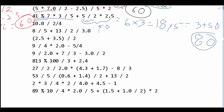Next, we have 8 divided by 5, which is just going to be 1, because we're rounding 8 down to 5 and dividing by 5. Then we are adding this to 13 divided by 2, which gives us 6. Then we divide that by 3, giving us 2.0. So our answer is going to be 3.0.